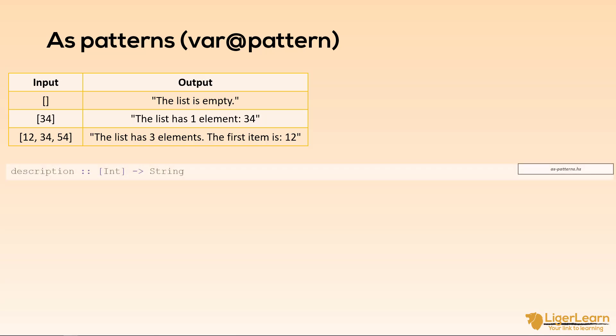So let's go ahead and implement this function. We are naming the function description and for the type signature we can see we will take a list of int and return a string. For the case with an empty list it is easy. We know we can just pattern match on the empty list and return the desired string.